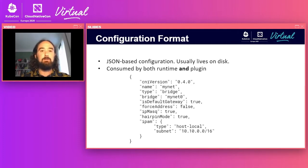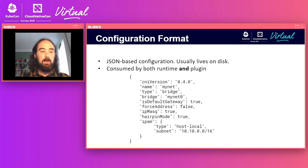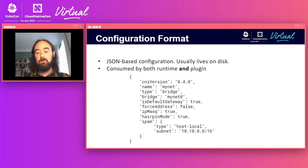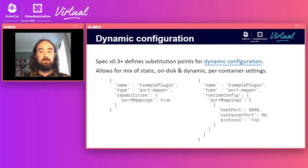This is the configuration format — a JSON-based configuration that usually lives on disk. It is consumed by both the runtime and the plugin. The first three configuration fields — version, name, and type — are consumed by both the runtime and the plugin and are used for version negotiation and plugin discovery. The remaining sections of the sample configuration file are plugin specific, not consumed by the runtime and not really part of the CNI specification. So they are open for you as a plugin maintainer or system administrator to use. It's a simple format, a hybrid of both the runtime and plugin side configuration in a single file.